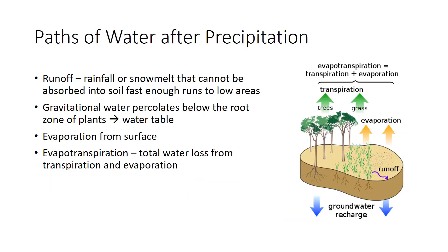Let us look more carefully at the point in the cycle when precipitation lands on the soil. Water proceeds in the cycle by one of four paths. Rainfall or snowmelt that cannot be absorbed into the soil fast enough runs into low areas, streams, or lakes — this water is called runoff. Gravitational water percolates through the root zone of plants; some may enter the water table. Some of the remaining water stored in the soil evaporates from the surface back into the atmosphere. Most water taken up from soil by plants is transpired into the atmosphere. The total water loss due to transpiration and evaporation is called evapotranspiration.